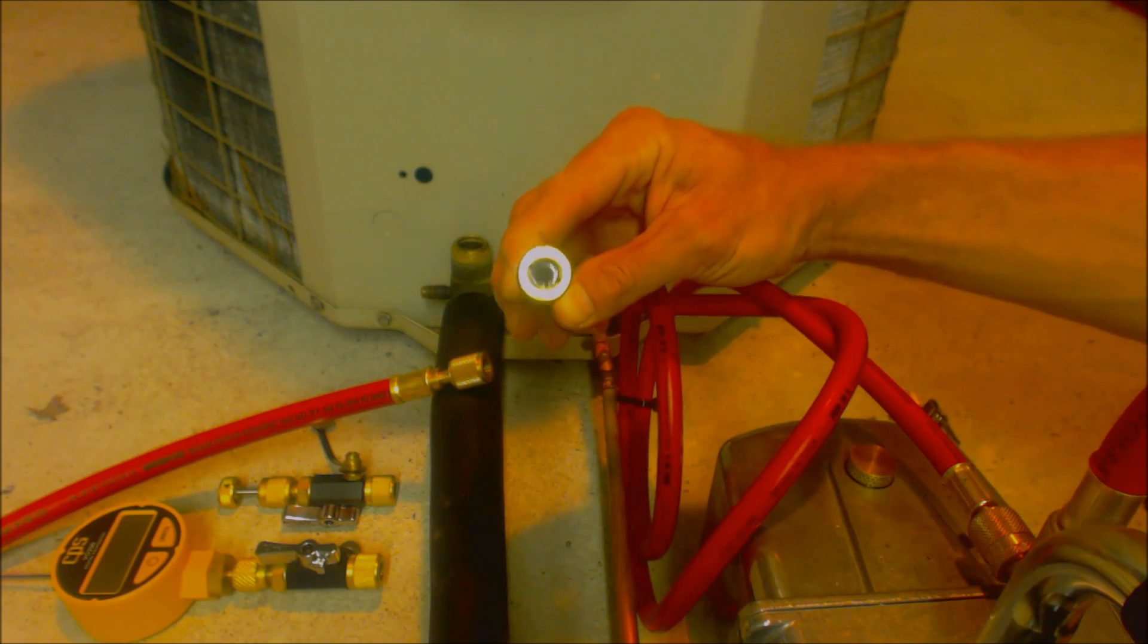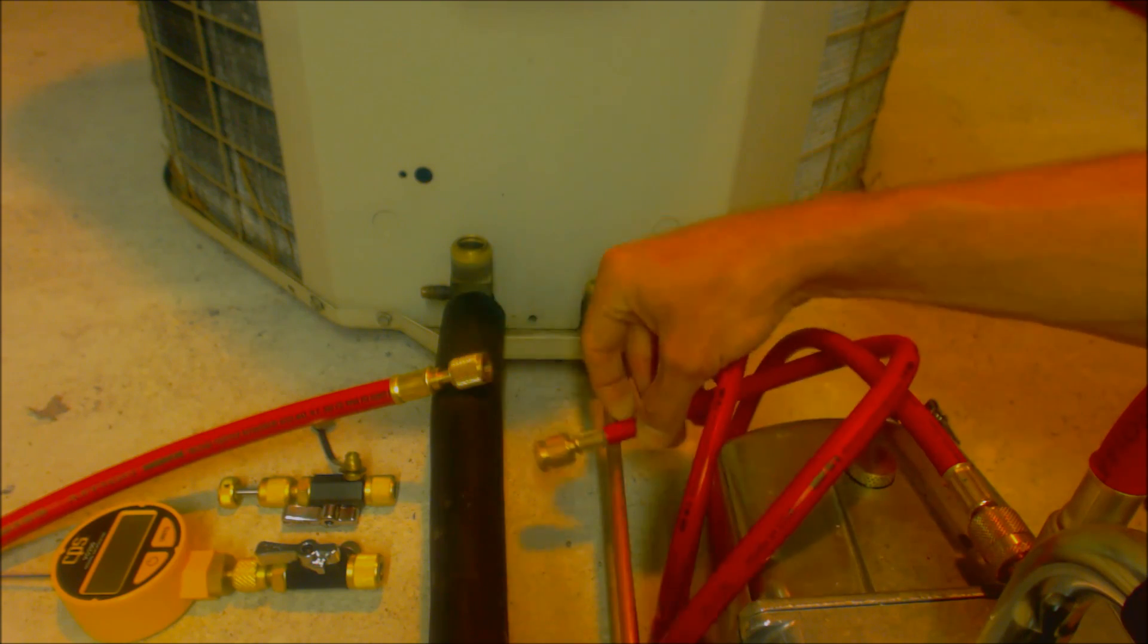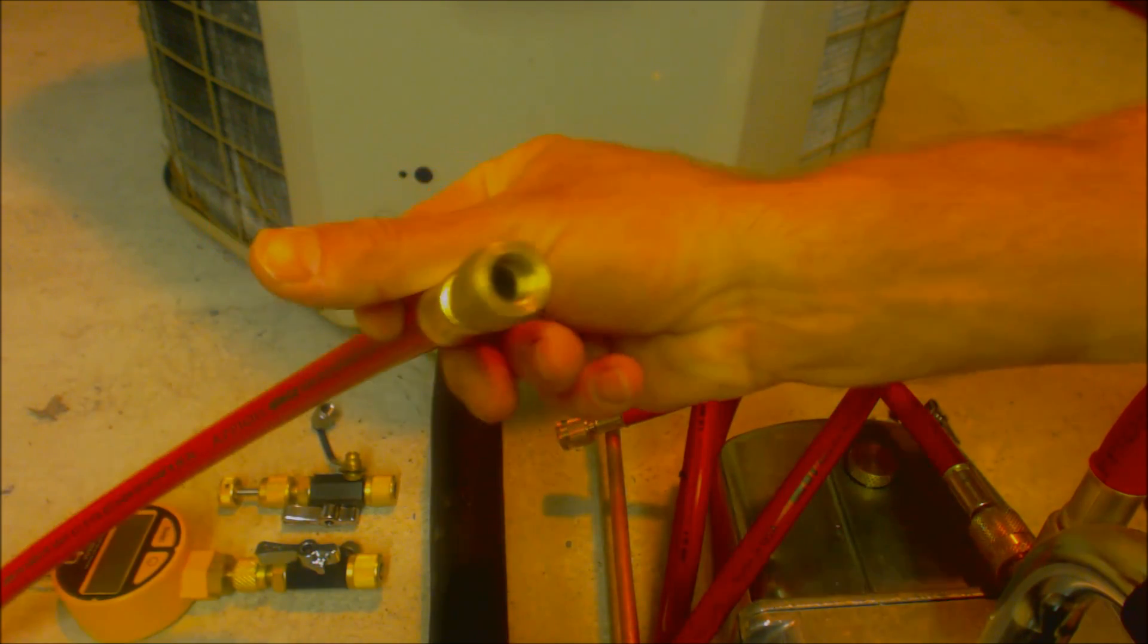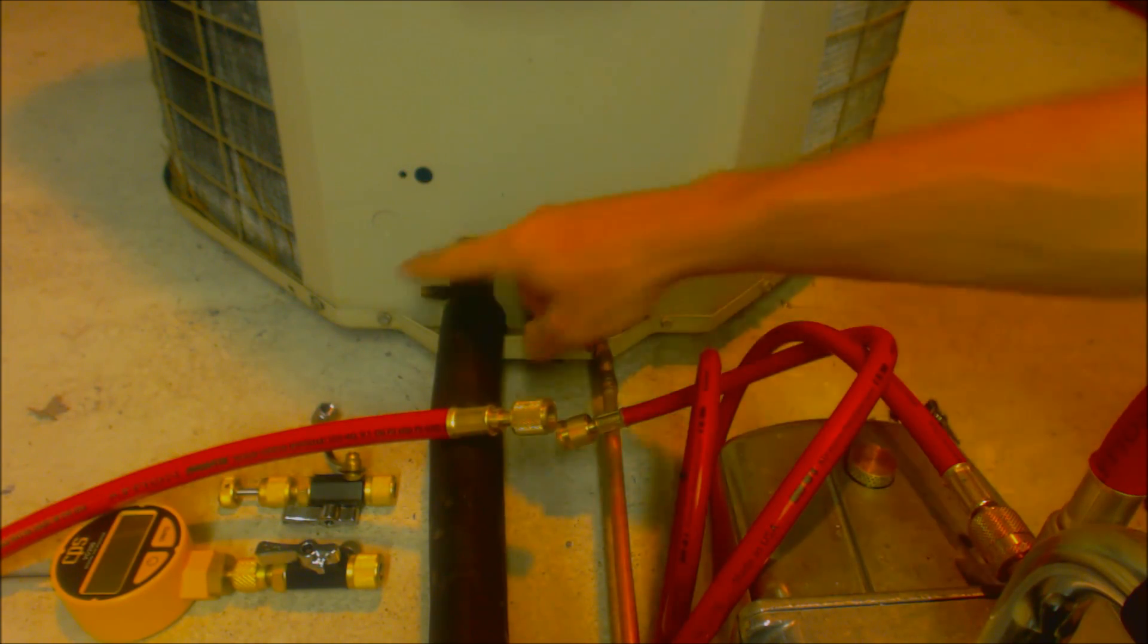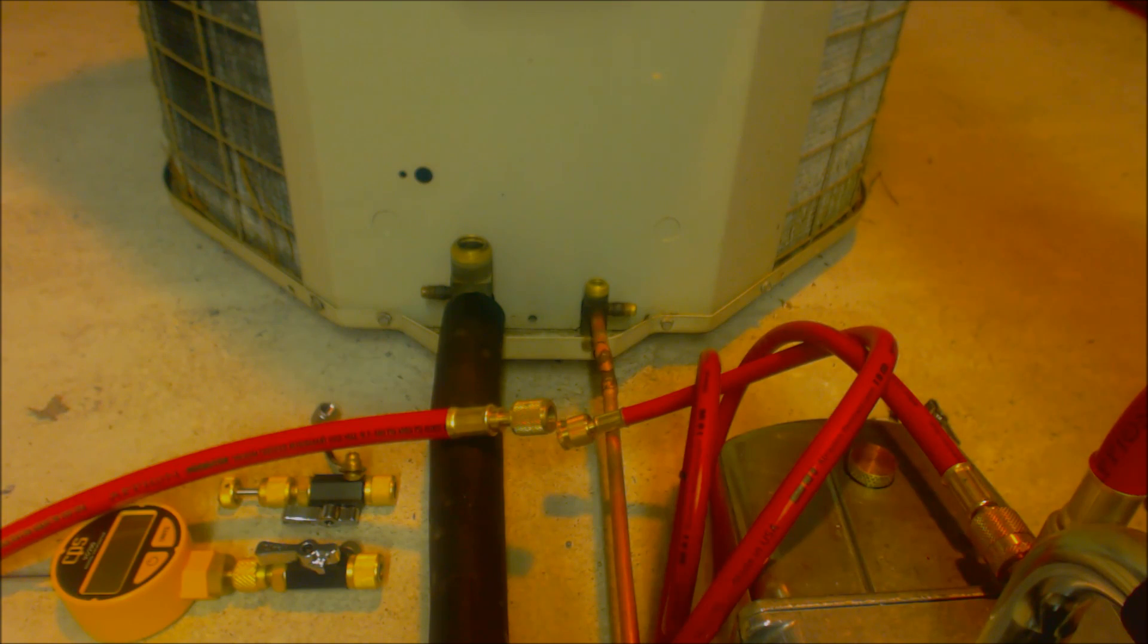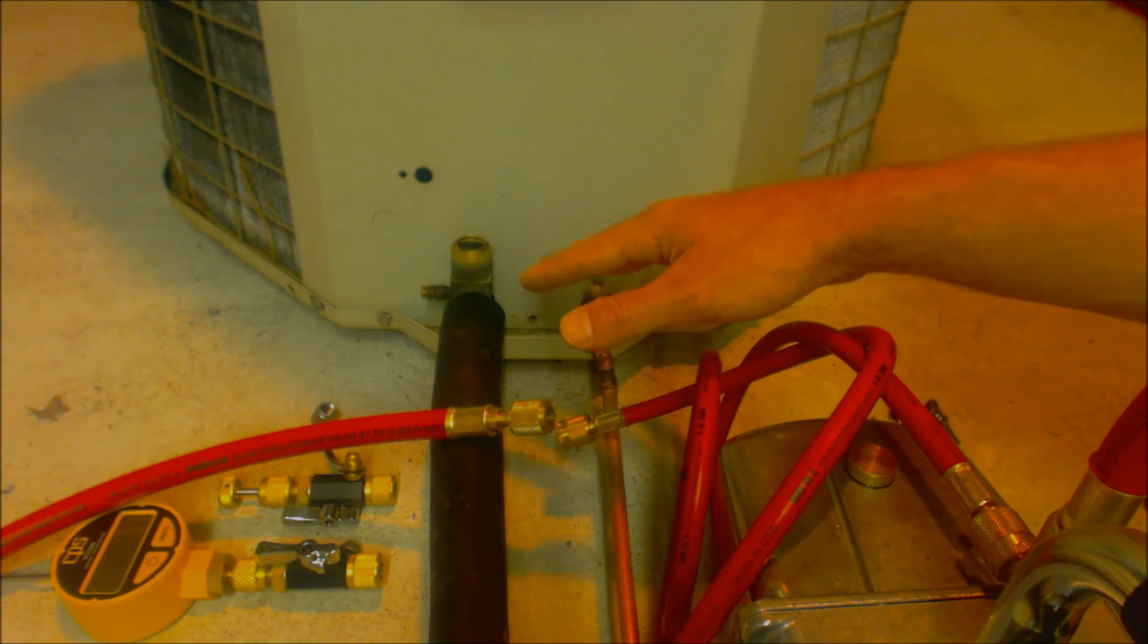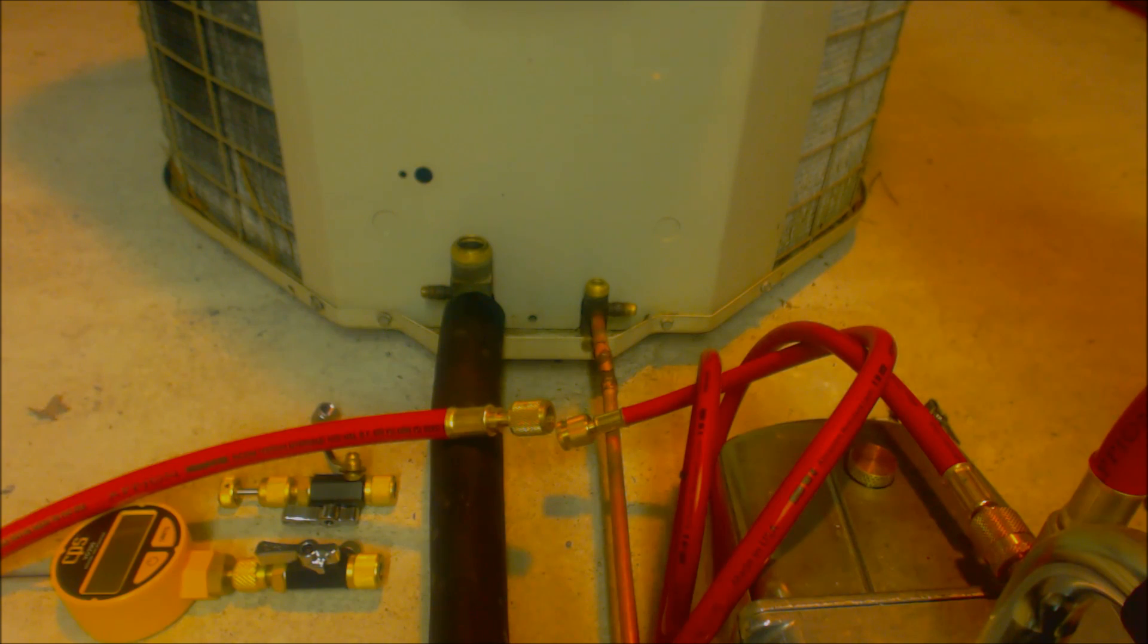Inside the hose there is no valve core depressor on this one or on this one - that would slow the flow of the vacuum. We are going to be pulling these valve cores out just to pull a more thorough vacuum. We're going to pull this vacuum down below 500 microns and it's going to hold below 500 microns. We're going to do a test for about 10 minutes just to make sure that it's holding the micron level.